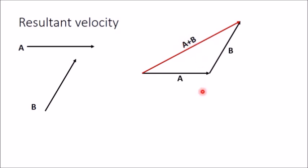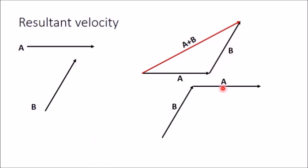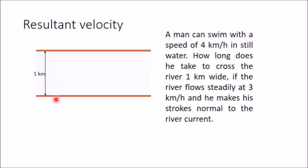You can draw A first and then B, or B first and then A. For example, drawing B first and then A from the end point of B — joining the start point of B to the end point of A gives you the same resultant vector A plus B.